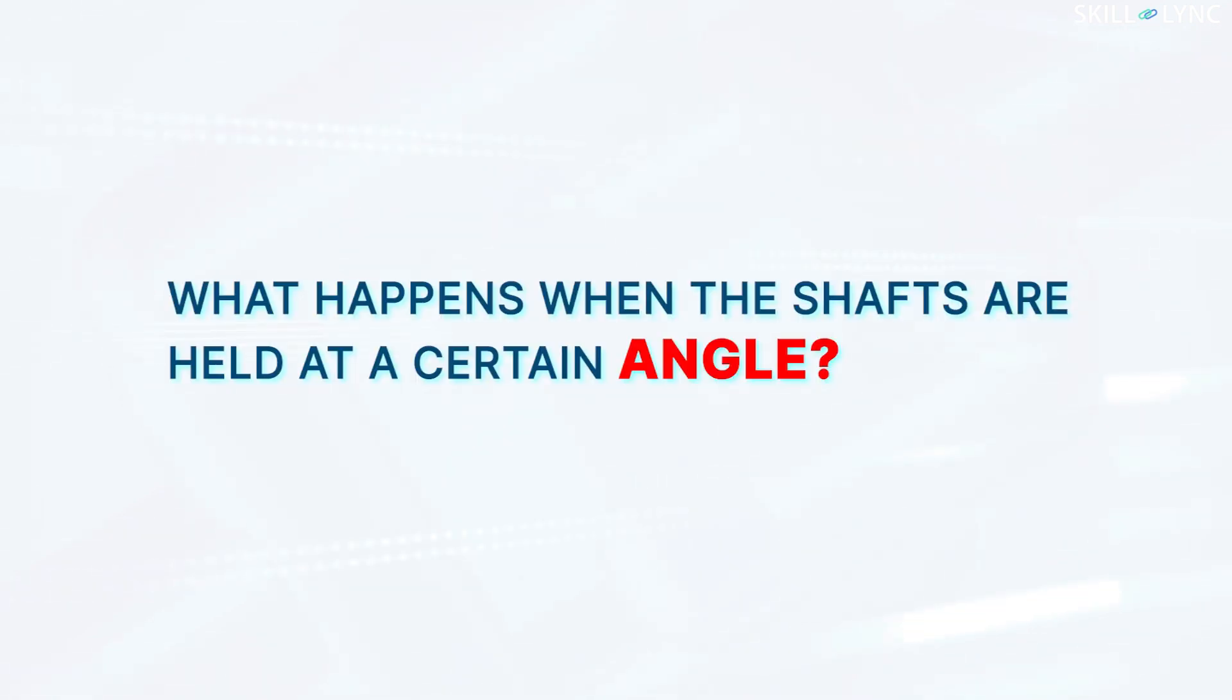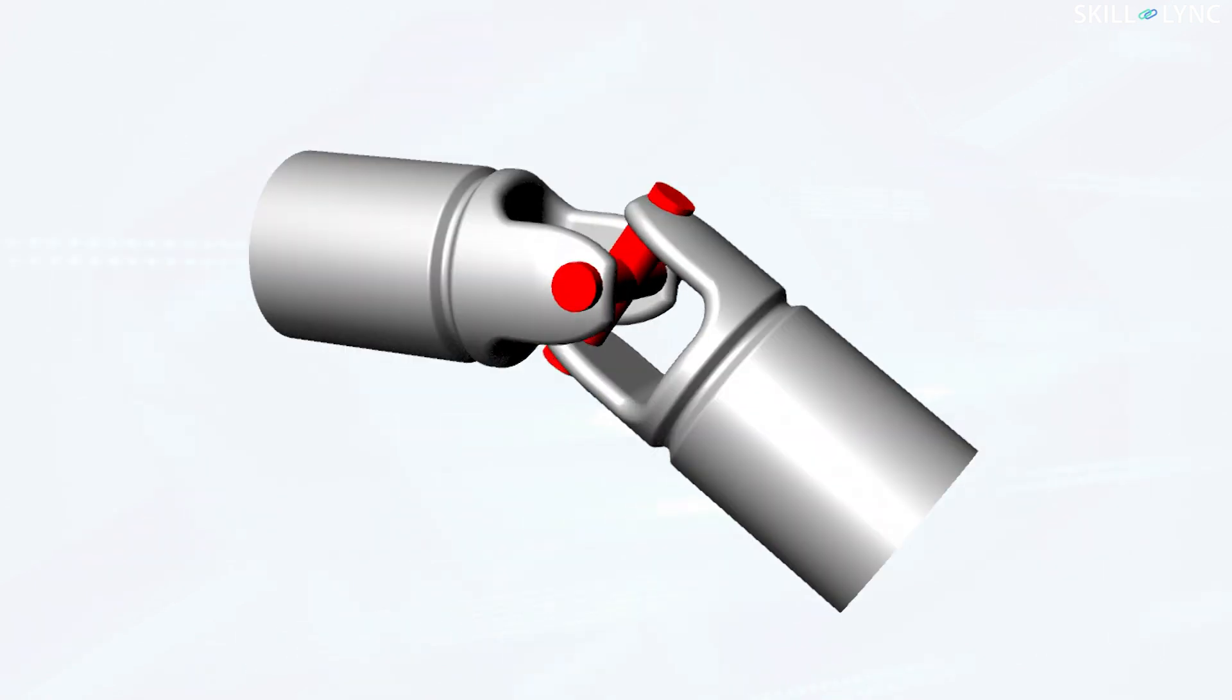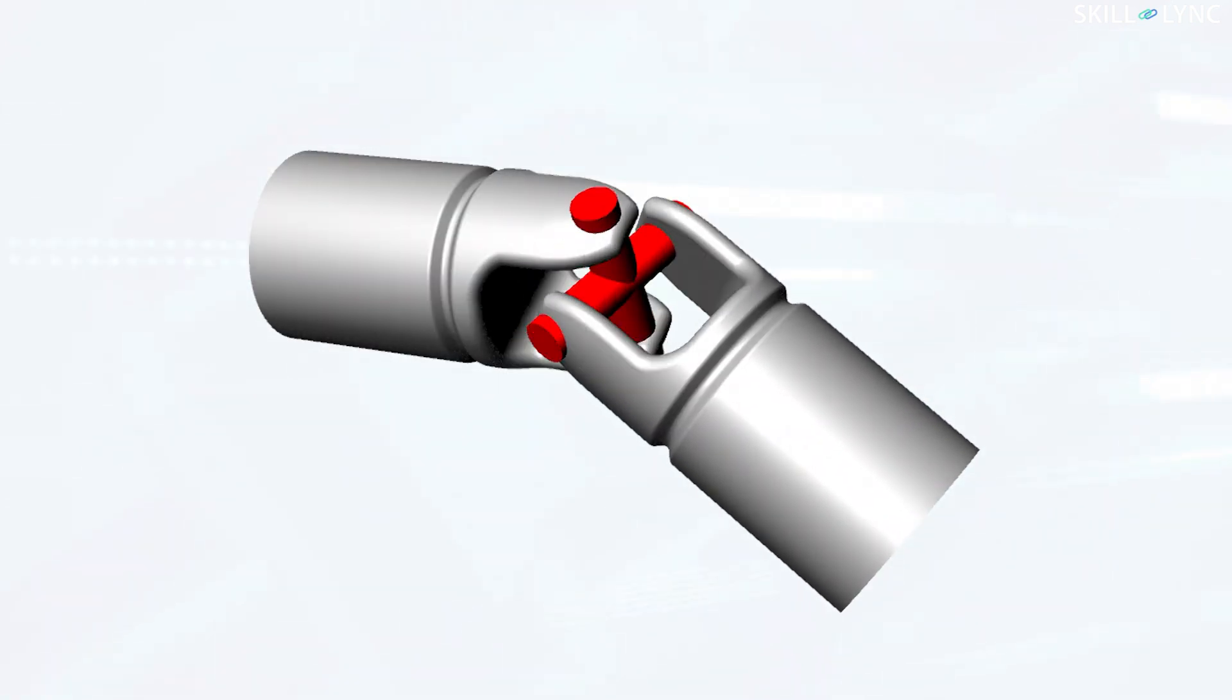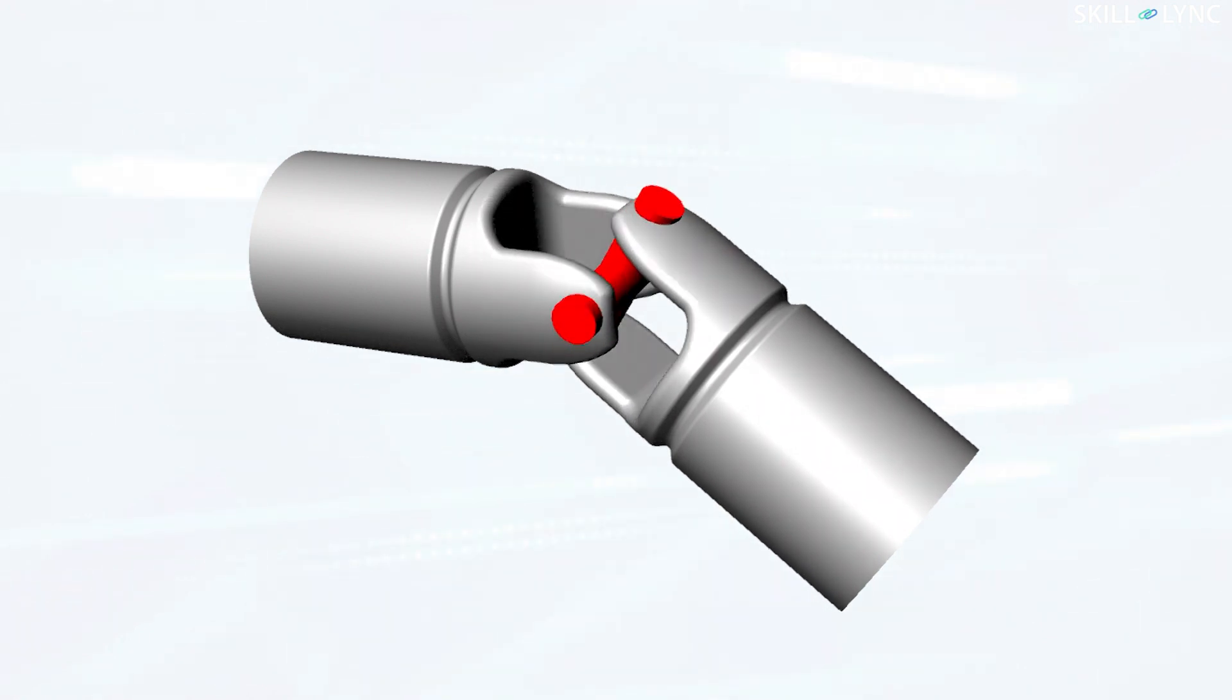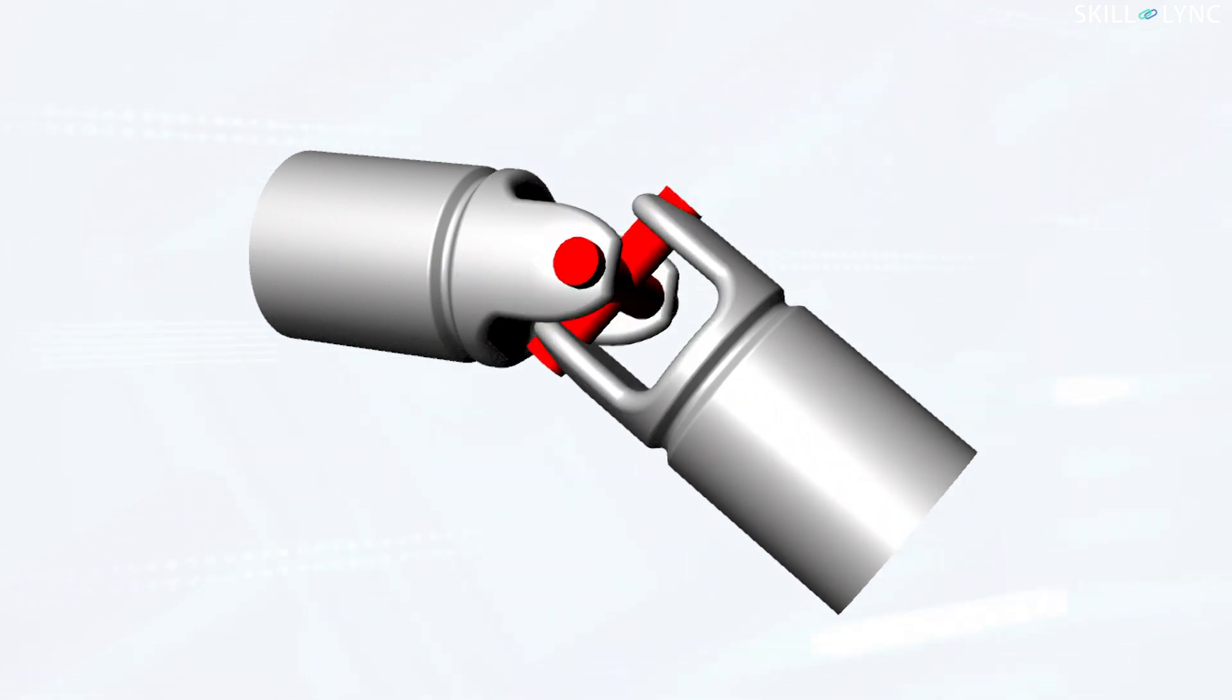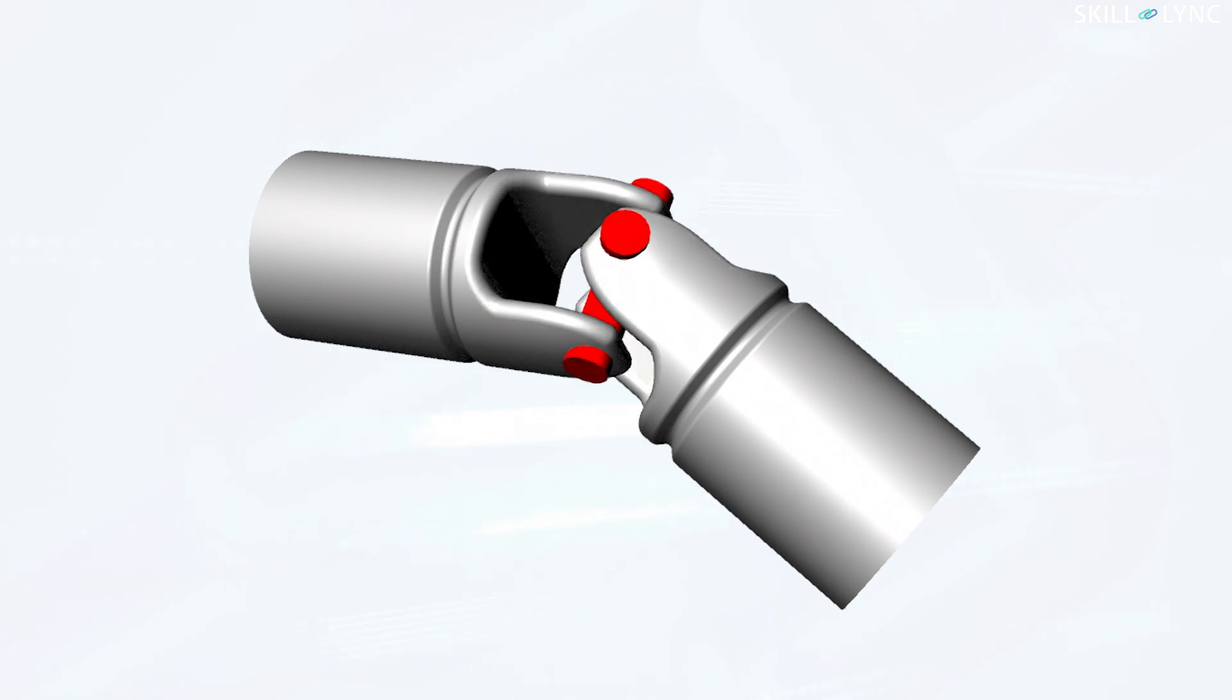Now, what happens when the shafts are held at a certain angle? When the driving shaft rotates, the cross member in addition to turning also spins because of the angular alignment. When the shafts are aligned at certain angles, the plane of rotation of both the shafts will be different. The spinning of the cross member permits the driven shaft to rotate at a different plane. Thus, the motion gets transmitted irrespective of the angular position of the shaft.